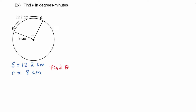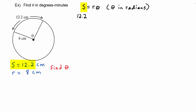We have S, R, and we're being asked to find theta, so the equation we'll use is S equals R times theta, where theta is in radians. Substituting in the known values: 12.2 equals 8 times theta. We divide both sides by 8 to get theta by itself, so theta equals 12.2 divided by 8.